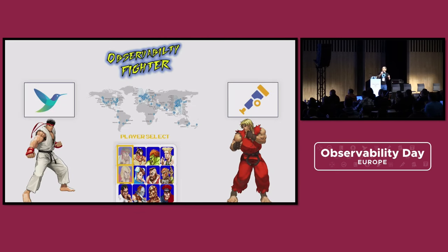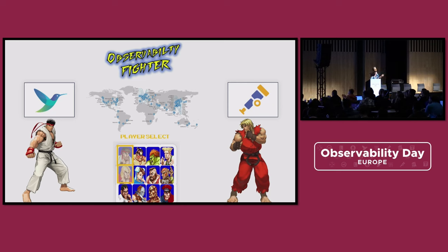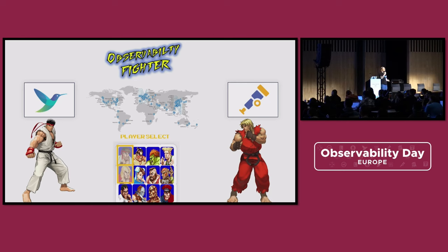So let's select the fighters. On the left side corner, we have Ryu — if you remember that game — coming from the Fluent Dojo. FluentD was out there, then FluentBit was released, mainly very popular in the logging space — it has proven itself. And recently with FluentBit 2.0 and 2.x, it started to support metrics and traces as well.